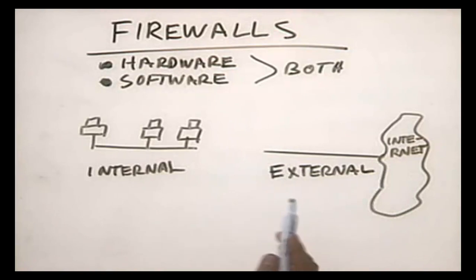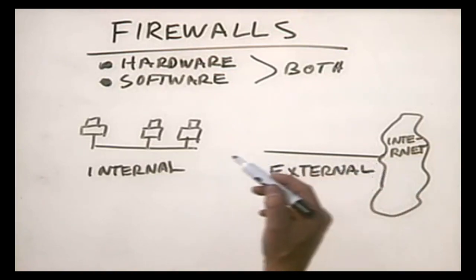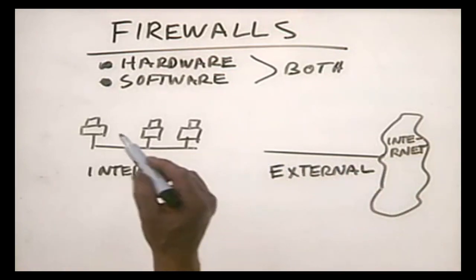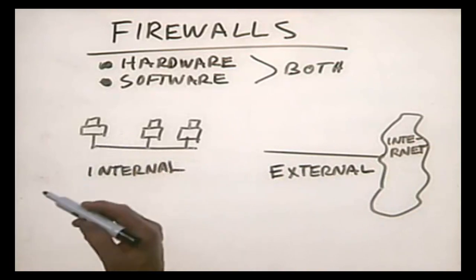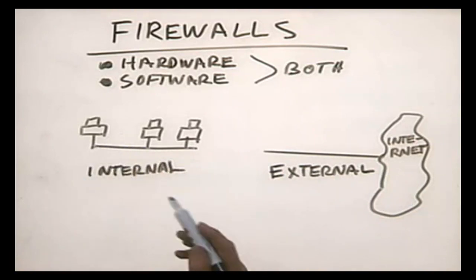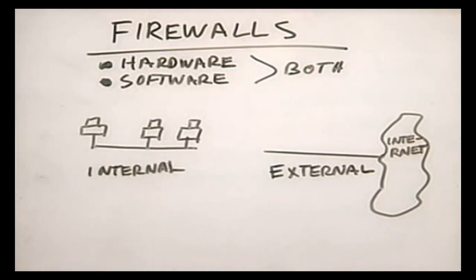If we did not implement some kind of barrier between these two, then anybody on the internet could find their way onto our internal network and could do all kinds of things. They could compromise data, they could steal data, they could bring systems down — all kinds of things. You don't want that kind of thing to happen.